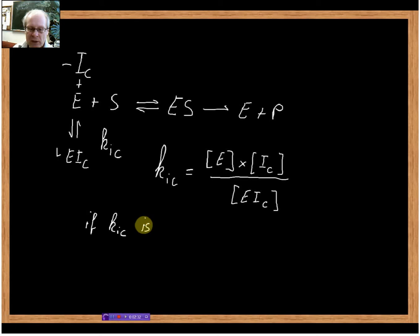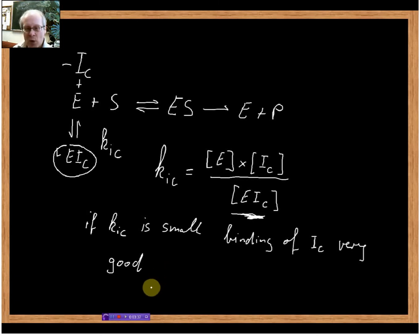We can immediately see that if KIC is very small, then this part of the equilibrium is very large because we've got something divided by something very large, which gives us something very small. That means the equilibrium lies very much on this side, or in other words, our inhibitor binds very strongly to the enzyme. So if KIC is small, binding of inhibitor is very good. The smaller KIC, the better the inhibitor.